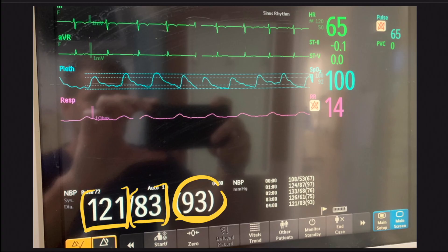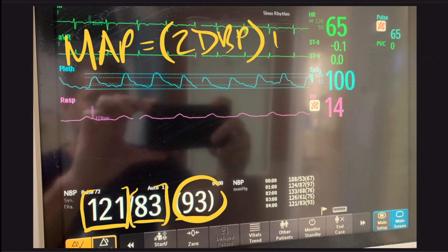First of all, if you use the fancy equation—and there's a couple of different formulas, but for the sake of simplicity—the mean arterial pressure equals two times the diastolic blood pressure, and then you add the systolic blood pressure to that, and divide it all by three. If you actually input these numbers, 121 over 83, you'll find that this patient's mean arterial pressure per the equation is supposed to be 95.6 repeating. That is not equal to 93.